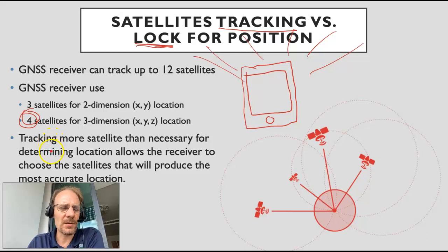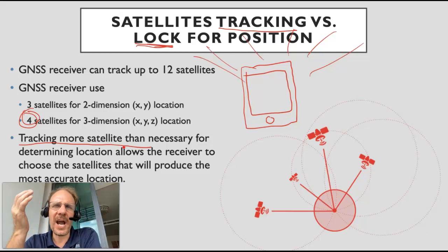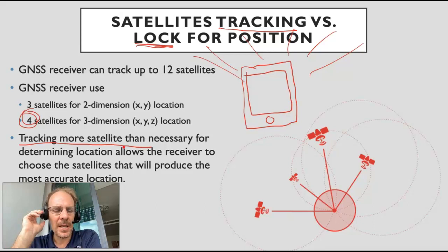From those 12, it selects four satellites to lock and calculate your position. The way to think about it is the more satellites you can track, the more accurate you're going to be. If I can track 12 satellites, then I can choose the best four for my location. If I can only track four satellites, then I have to use all four, and some of those satellites may not be in an ideal location for me.